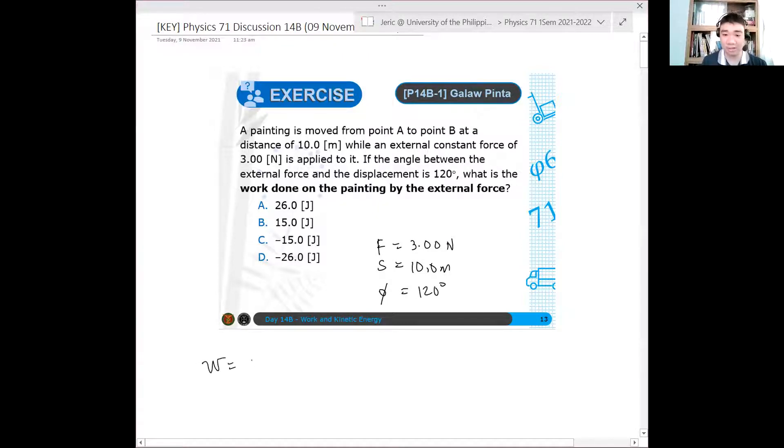the total work done is simply Fs cosine θ, which is just plug and play. We know that this is just 3.00 newtons multiplied by 10.00 meters times cosine of 120 degrees.